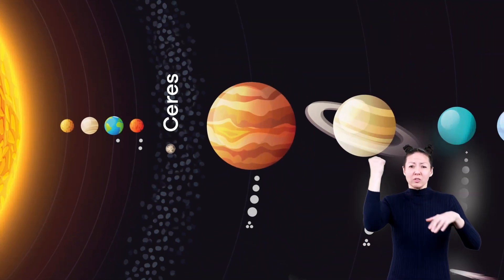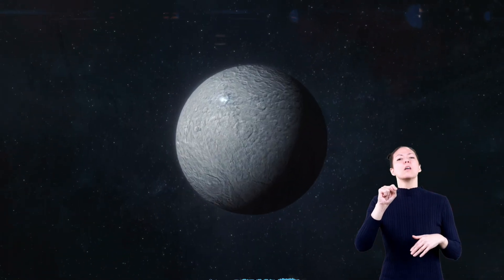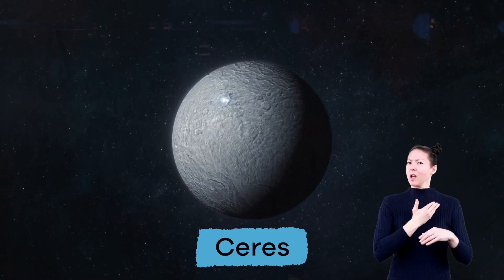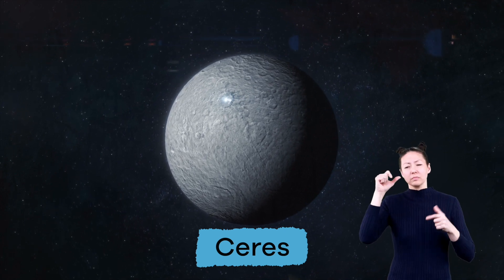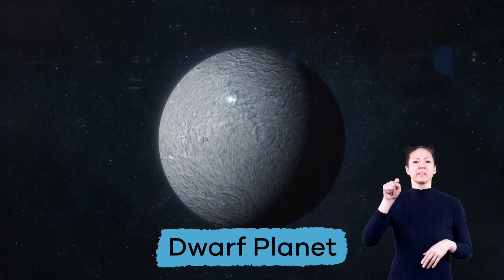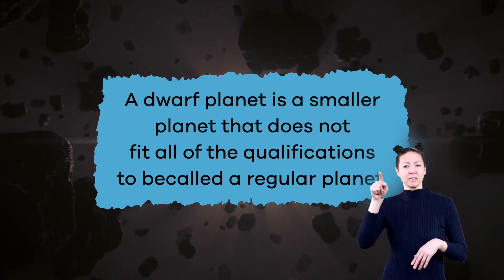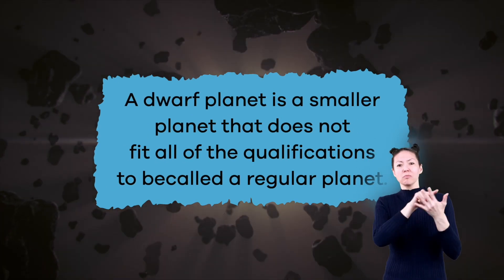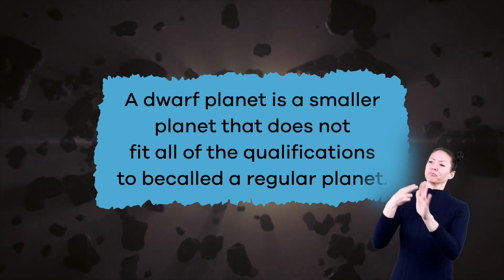Ceres is the largest asteroid in the asteroid belt. It is also thought to be the biggest asteroid in our solar system. Because it is so big, scientists decided to call it a dwarf planet. A dwarf planet is a smaller planet that does not fit all the qualifications to be called a regular planet.